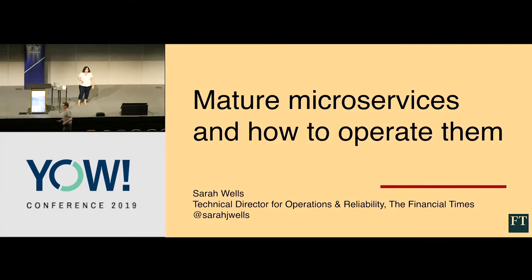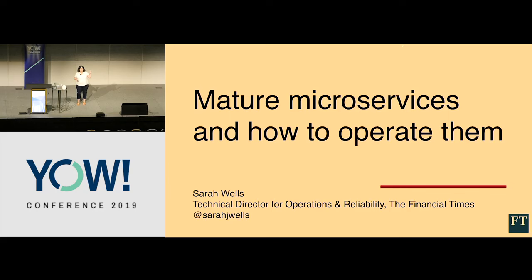Afternoon, everyone. We've been building microservices at the Financial Times now for over five years, and I'm going to talk about why we adopted that architecture, what we think we've got from it, how we've had to change the way we work to be successful, and what we found essential in order to operate them. But I'd like to start by getting a view of how many of you are operating microservices in production — and keeping your hand up if you've been doing it for two or four years. Some of you are in there early; you're probably feeling some of the same pain that we are.